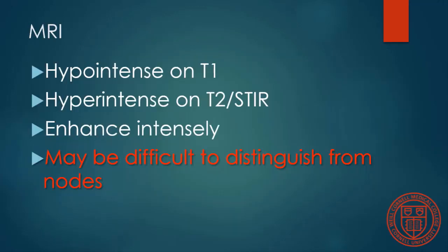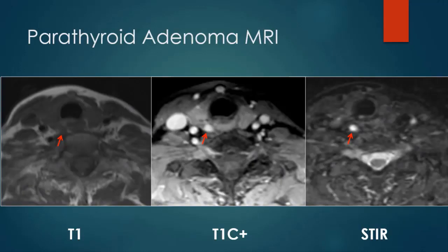MRI has also been used, even early at the NIH. Parathyroid adenomas are dark on T1 and bright on T2 or STIR, and they enhance uniformly. That can be difficult to distinguish from nodal disease in the neck. Here is a classic parathyroid adenoma seen on MR: dark on T1, enhances relatively uniformly, very bright on STIR exam.